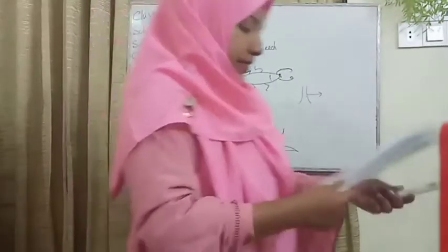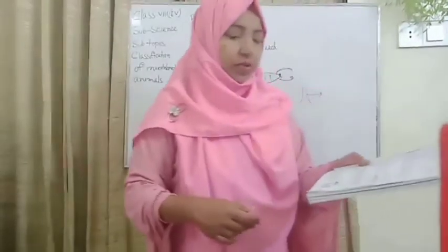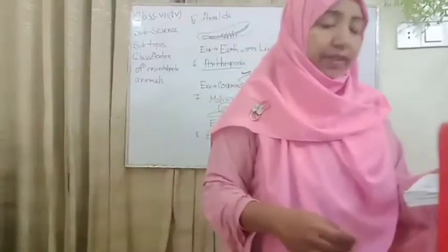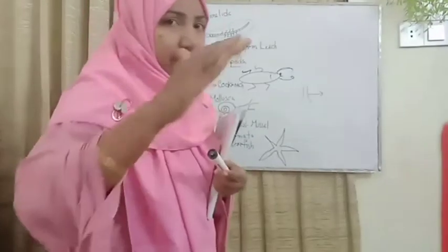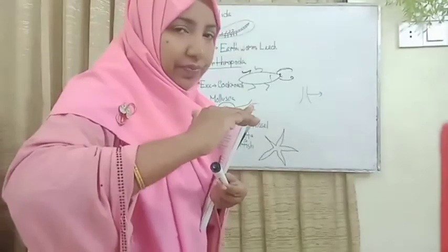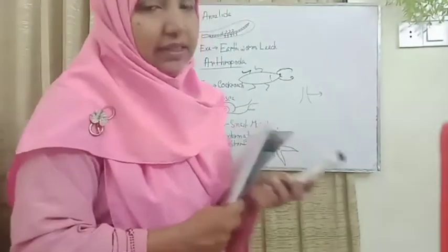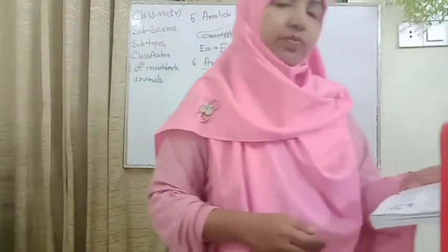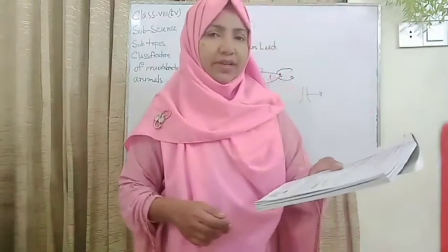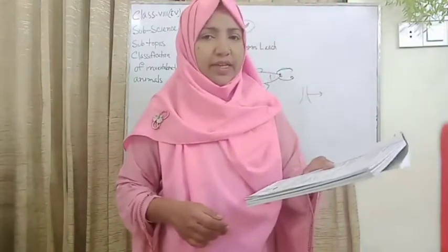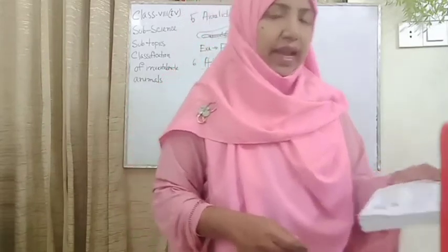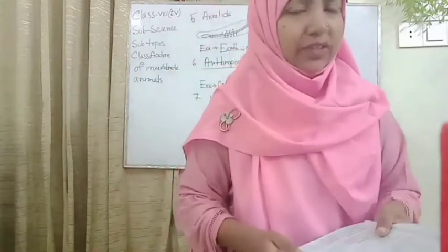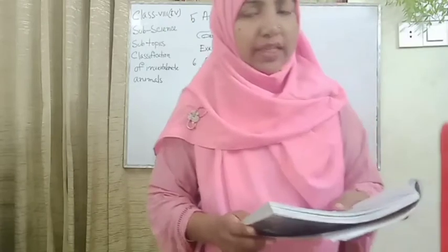The soft body is covered with a chitinous exoskeleton. You know the cockroaches — they have a brown-colored outer layer, and that outer layer is another name for chitinous. Exo means outer skeleton.